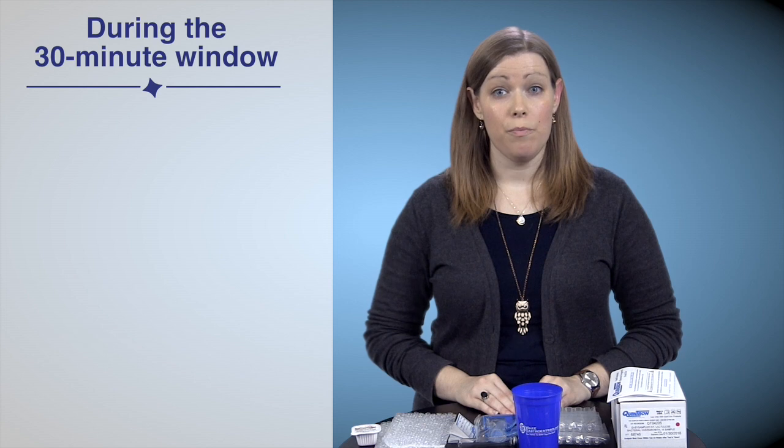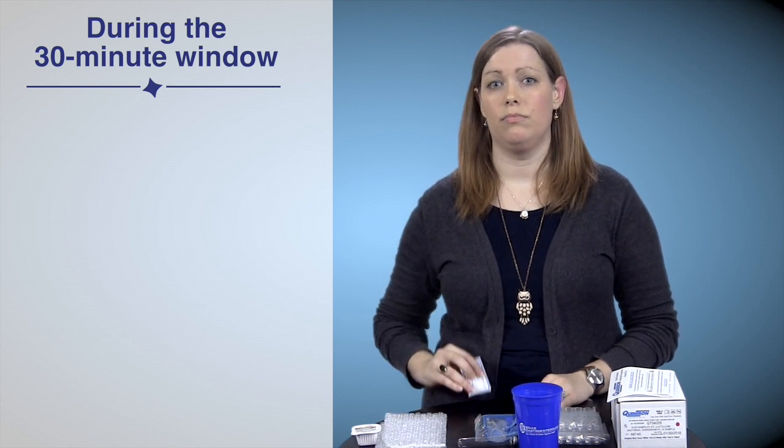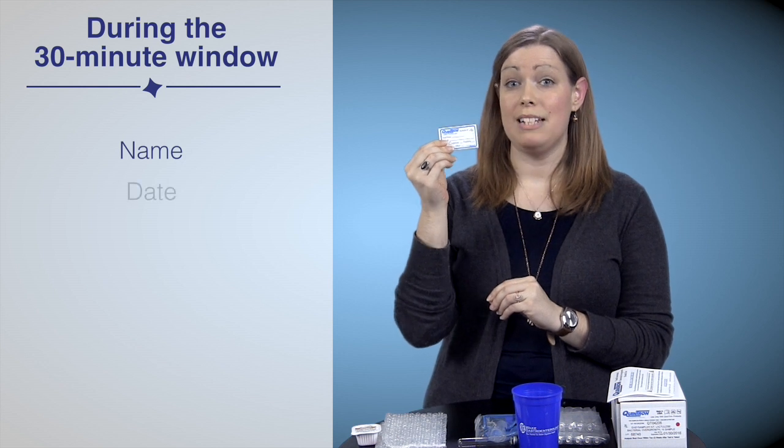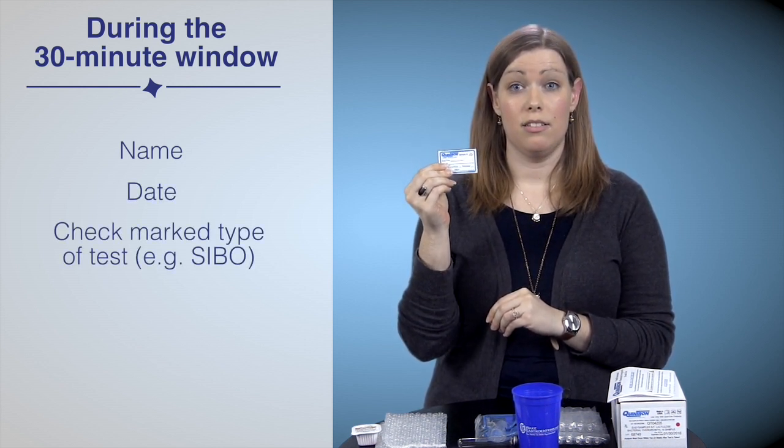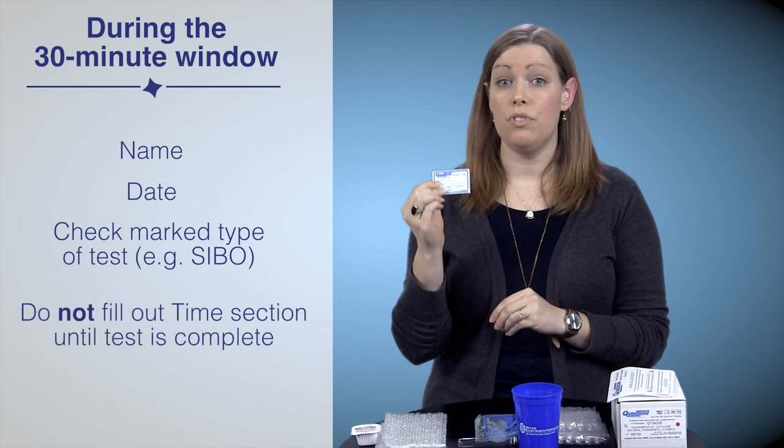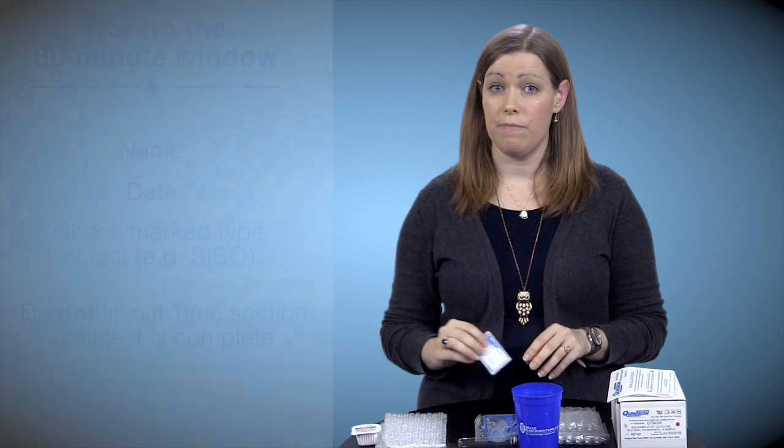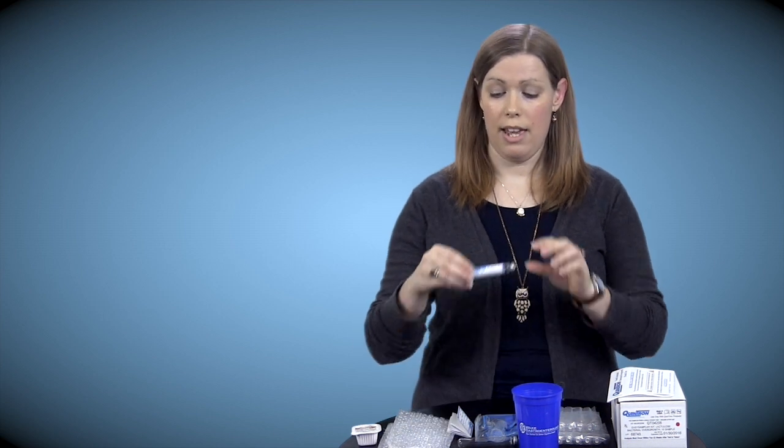During that 30-minute window, pre-fill the labels. This includes name, date, check mark type of test. Example, SIBO. Do not fill out the time section until performed. Each time you breathe in a tube, write down the exact time, peel the label off, and put it on your tube like this. This is a time test, so make sure that you have a clock, a stopwatch, or a cell phone on hand to ensure the test is performed at the correct intervals. Make sure the collection number is correct or your results will be inconclusive. Basically, you don't want to test again, right?